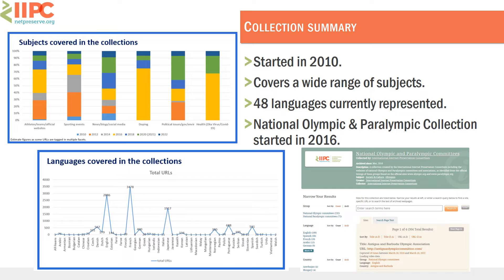Looking at the subjects covered in the collection: different colours represent the different years. The first column is athletes, teams, and official websites related to the Olympics and Paralympics. Then we have sporting events for individual events, followed by news, blogs, and social media all grouped together. Then doping — there are only four different years for doping because that's something we actively started to collect from the 2016 collection onwards. Then political issues, where some years show more collected than others. Health is the last column, only appearing in the last four games.